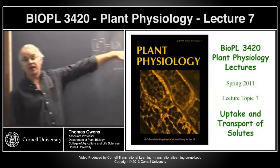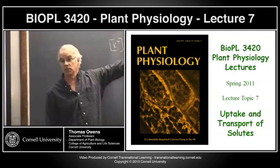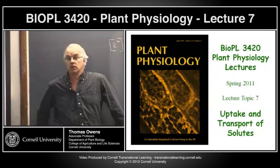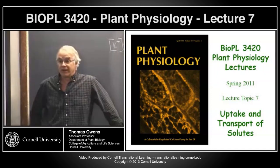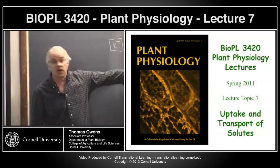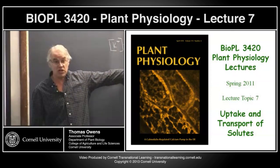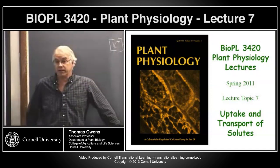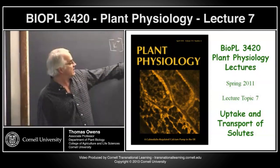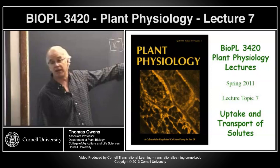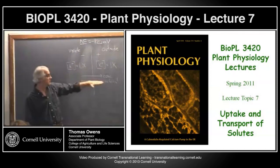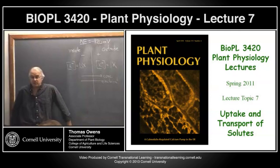We have a factor of 10 concentration gradient pointing outwards and a 120 millivolt electrical potential pointing inward. Which one wins? The electrical gradient wins. If it's 120 millivolts, that's equivalent to a factor of 100 concentration difference, not a factor of 10. The concentration gradient points out, the electrical gradient points in, and the electrical gradient wins.